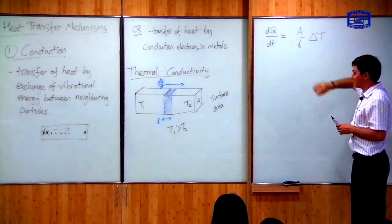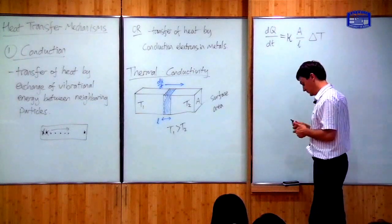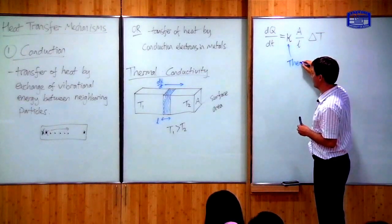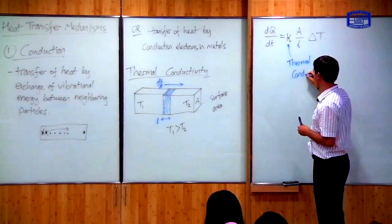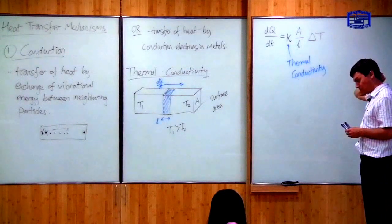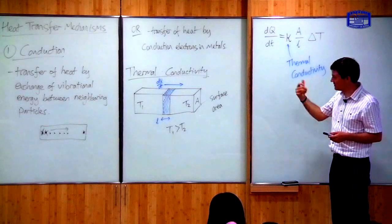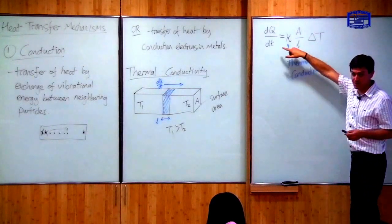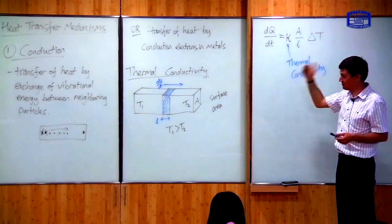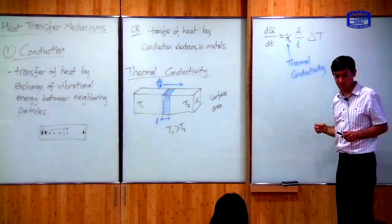There is some constant here which is usually given the symbol kappa, known as the thermal conductivity. This characterizes the system. If kappa is a very big number, you will have a high heat flow. If kappa is small, then the rate of heat flow will be small.